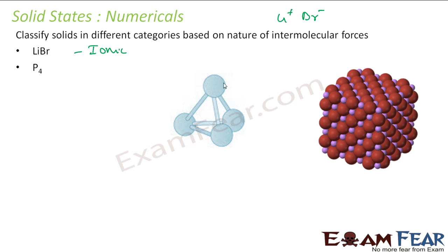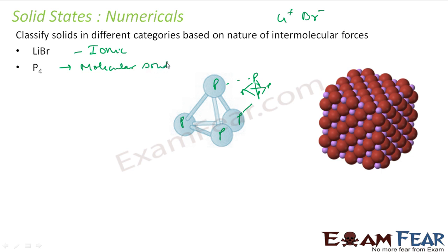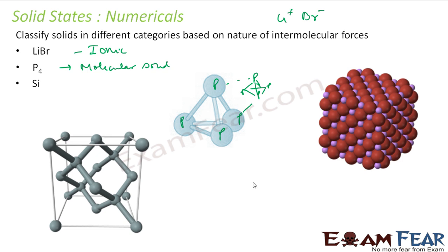P₄ is a phosphorus molecule — there are vast numbers of these molecules linked by van der Waals forces of attraction. Molecules are the basic building block, so it is a molecular solid. Silicon forms a network structure, so it is a network or covalent solid. Silicon and carbon typically form network solids. Plastic is amorphous — it is not crystalline.